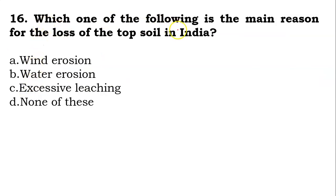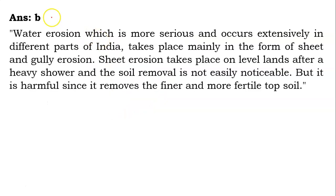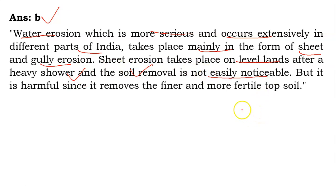The sixteenth question: which one of the following is the main reason for the loss of topsoil in India — wind erosion, water erosion, excessive leaching, or none of these? Its answer is B — water erosion, which is more serious and occurs extensively in different parts of India, takes place mainly in the form of sheet and gully erosion. Sheet erosion takes place on level lands after a heavy shower, and though soil removal is not easily noticeable, it is harmful since it removes the finer and more fertile topsoil.